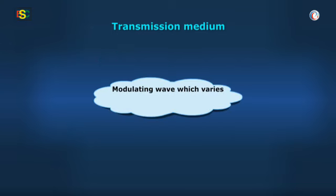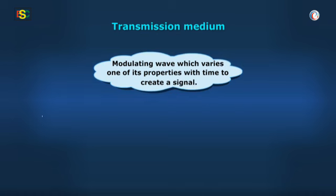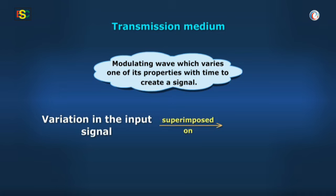The modulating wave varies one of its properties with time to create a signal. By superimposition, the variation in the input signal is also created in the carrier wave.